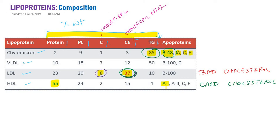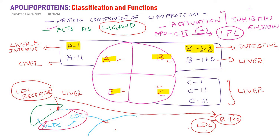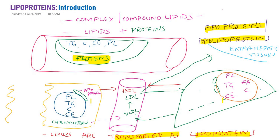LDL contains only one major apolipoprotein, B100, as well as apolipoprotein C. These are the differences between the different lipoproteins with respect to their structure and functions.